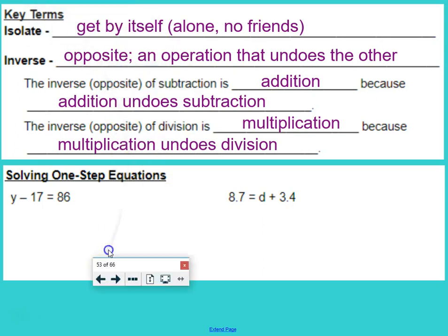First off, some key vocabulary terms. Isolate: get by itself, alone, no friends. When we solve an equation, our goal is to isolate the variable, get the variable, the letter that represents a number, all by itself.